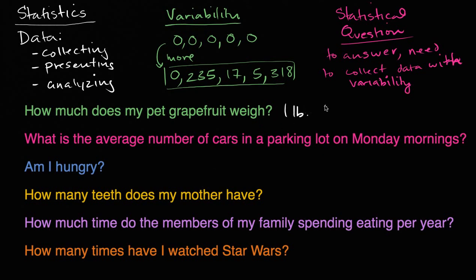In order to have variability, I have to have multiple data points, and it should be at least possible that they could vary. For example, all of those folks ate zero bricks, but maybe it was possible that someone actually ate a brick. But here I just have one data point — with one data point, you can't have variability. So this is not a statistical question.